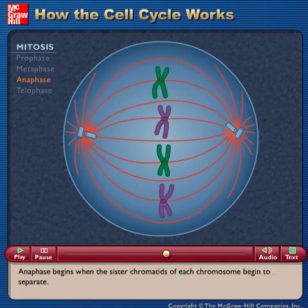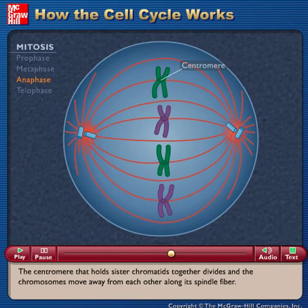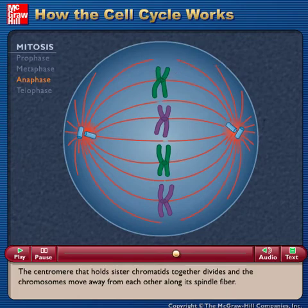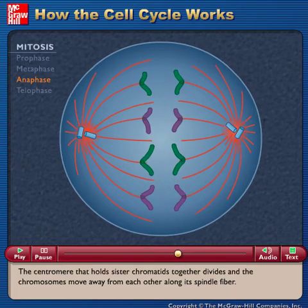Anaphase begins when the sister chromatids of each chromosome begin to separate. The centromere that holds sister chromatids together divides and the chromosomes move away from each other along its spindle fiber.